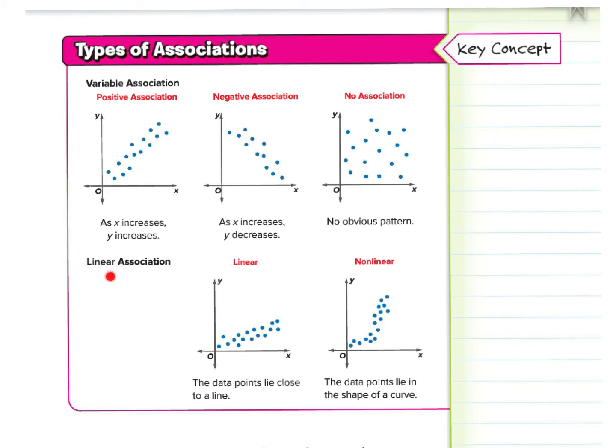And then linear association. So this is variable. This is linear. The data points lie close to a line. You can almost draw a line in there, as you see right there. And then we also have non-linear. Very similar to when we have non-direct variation or when we were drawing parabolas earlier in the year. Or what we call exponential notations. So the shape points lie in the shape of a curve. Like so. Sort of like curving upward.